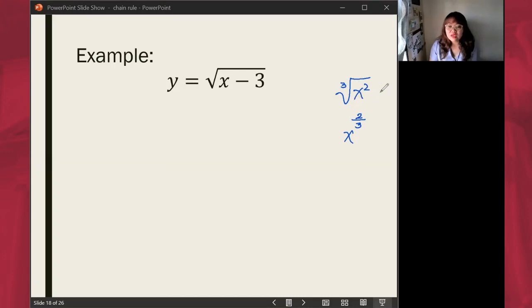So the cube root of x squared is going to be written as x raised to two-thirds in terms of exponential expressions.